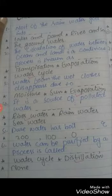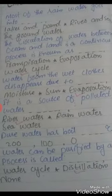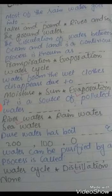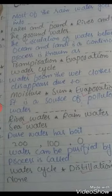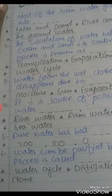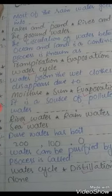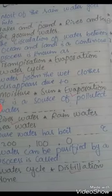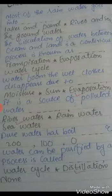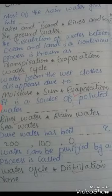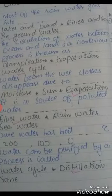Number 1: Most of the rain water goes into dash. Options: lags and ponds, river and sea, the ground water. Correct option is the ground water.